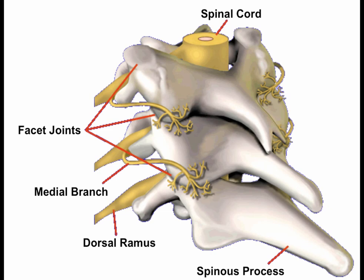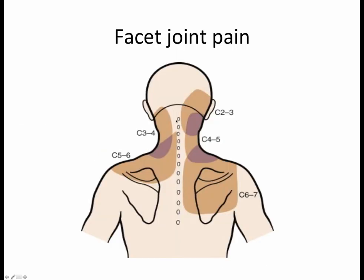The medial branch of the dorsal primary rami is the nerve targeted by a block or rhizotomy. Referred pain patterns from a facet joint can include neck pain, posterior headaches, and shoulder pain. Knowing these radiation patterns prevents you from assuming it must be a shoulder problem or a primary headache — it could be a cervical origin even if the patient initially complains of pain elsewhere.